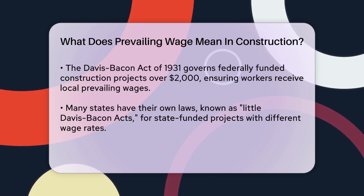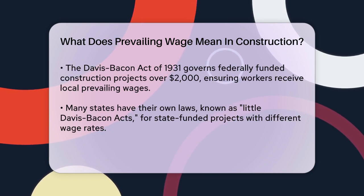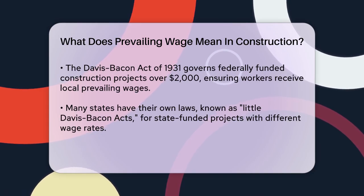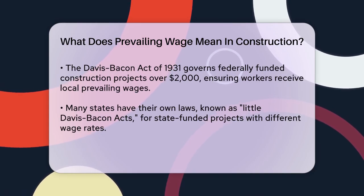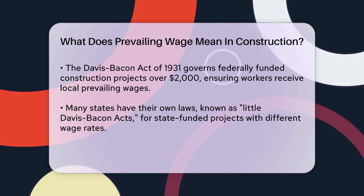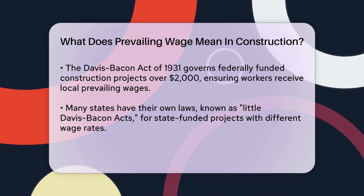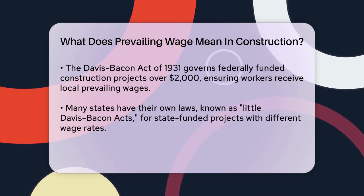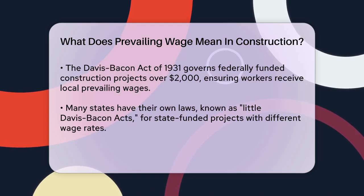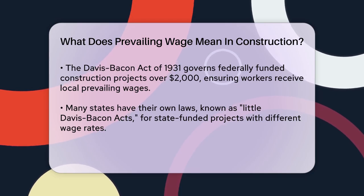At the state level, many states have their own prevailing wage laws, often referred to as Little Davis-Bacon Acts. These laws apply to state-funded construction projects and can have different wage rates than federal projects. For instance, Pennsylvania's Prevailing Wage Act applies to state and local government contracts exceeding $25,000.